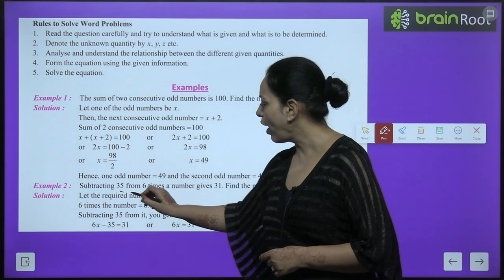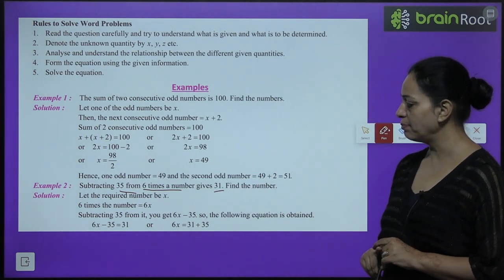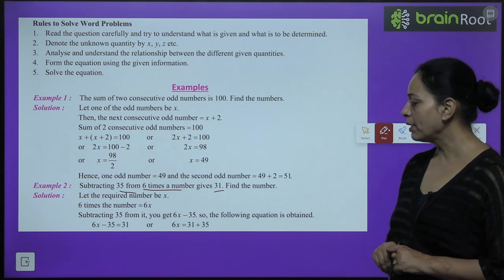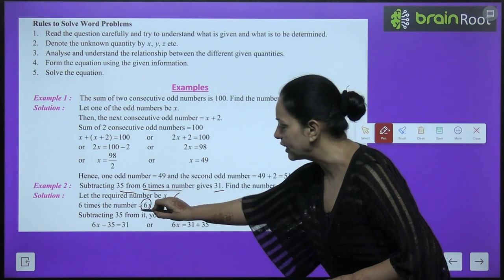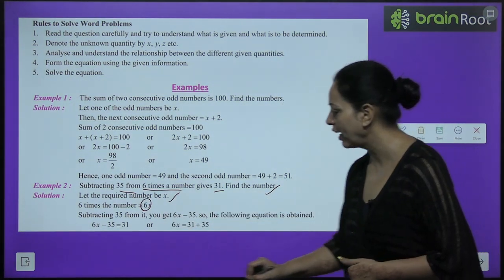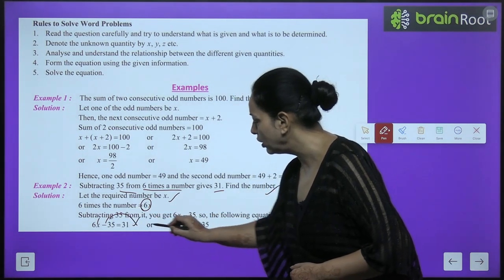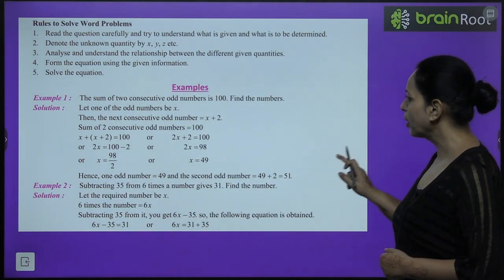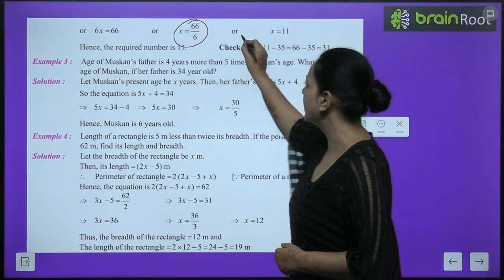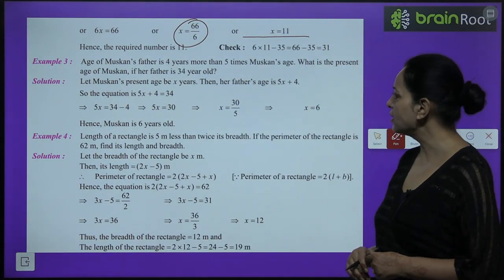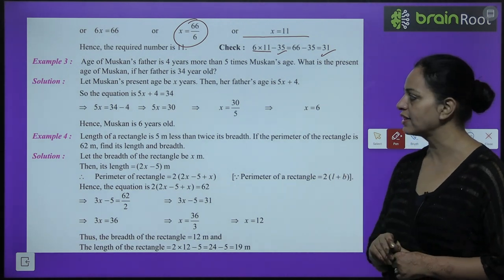Example 2: Subtracting 35 from 6 times a number gives 31. Let the number be x. Equation: 6x minus 35 equals 31. Transpose minus 35: 6x equals 66. So x equals 11. Verify: 6 times 11 equals 66, minus 35 gives 31. Correct.